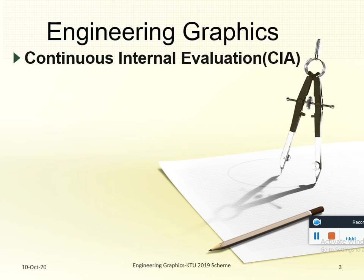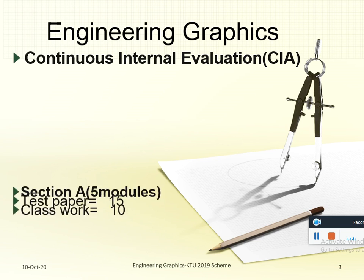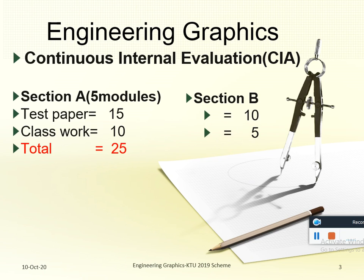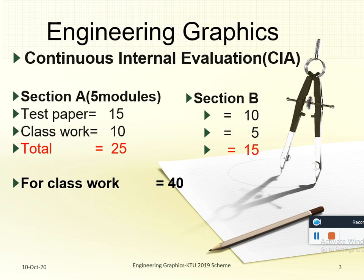Internal evaluation will be there for every subject. For Engineering Graphics, from Section A, you get 15 marks for Test Paper and 10 marks for Classwork, covering all 5 modules. In Section B, you get 10 marks for Test Paper and 5 marks for Classwork. So, a maximum of 25 marks from Section A and 15 marks from Section B, giving you a combined 40 marks for Classwork.